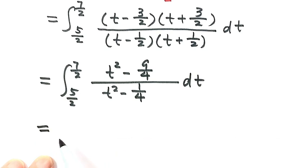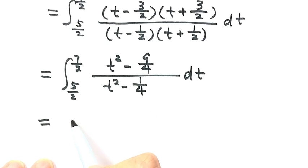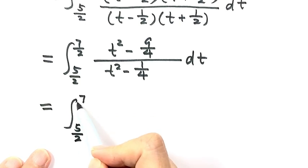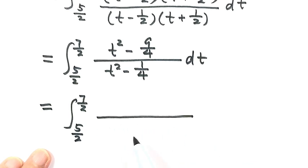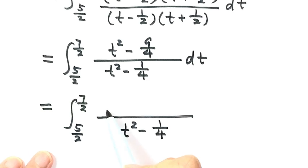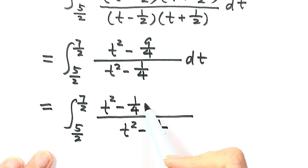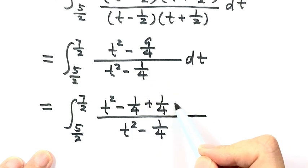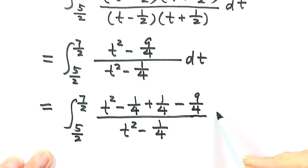Next, we manipulate the numerator. We write t² - 9/4 as (t² - 1/4) + (1/4 - 9/4), which is (t² - 1/4) - 8/4, i.e., (t² - 1/4) - 2. This is adding and subtracting so the value is unchanged, and it lets us split the fraction nicely.